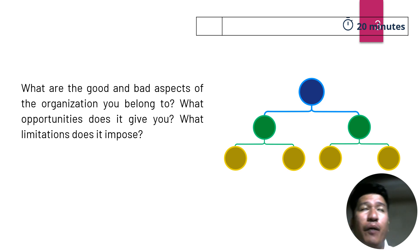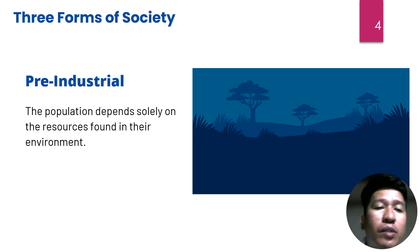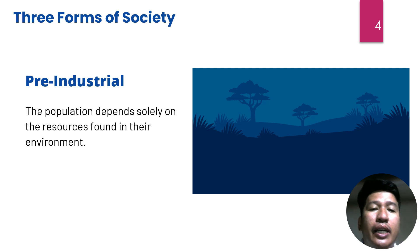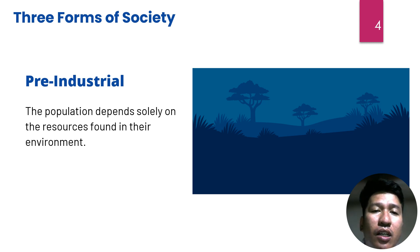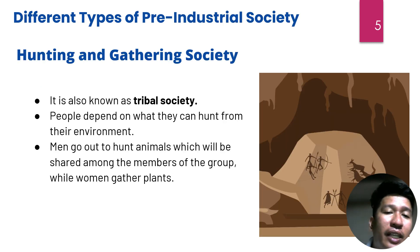These questions will be answered throughout our discussion. There are three forms of society. The first is pre-industrial society, where the population depends solely on the resources found in their environment. There are different types of pre-industrial society. The first type is hunting and gathering societies, also known as tribal societies.